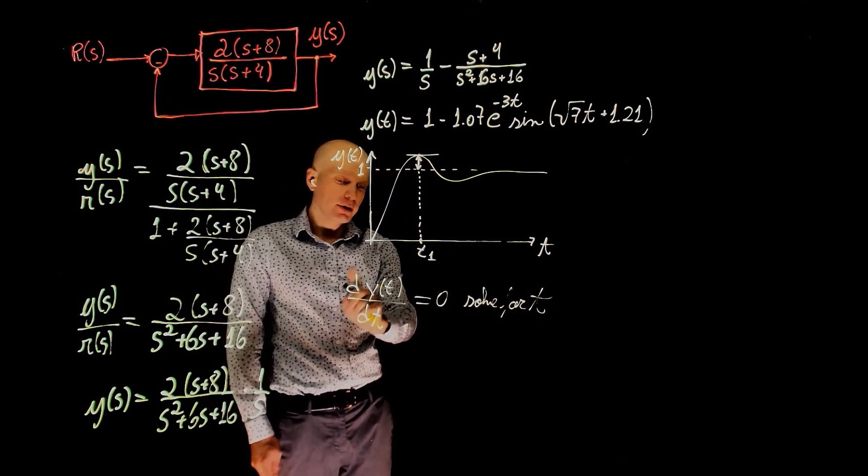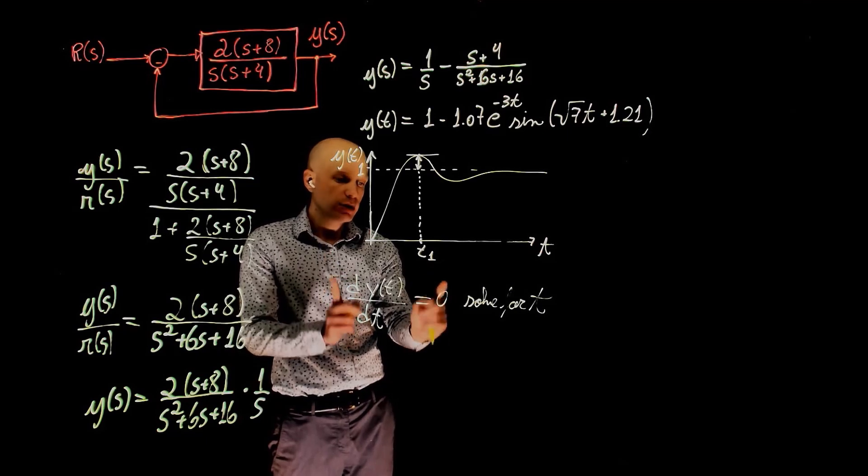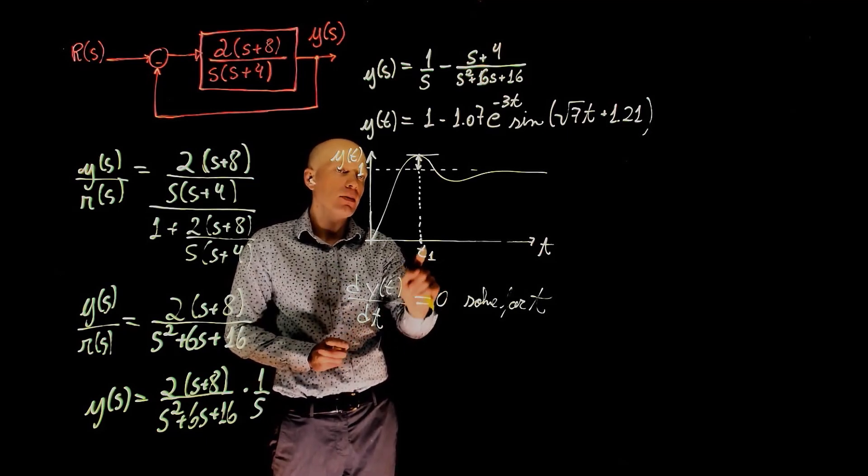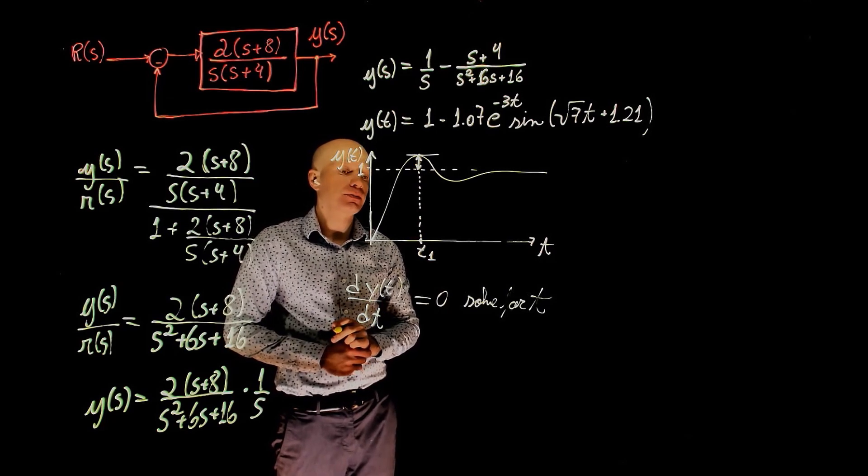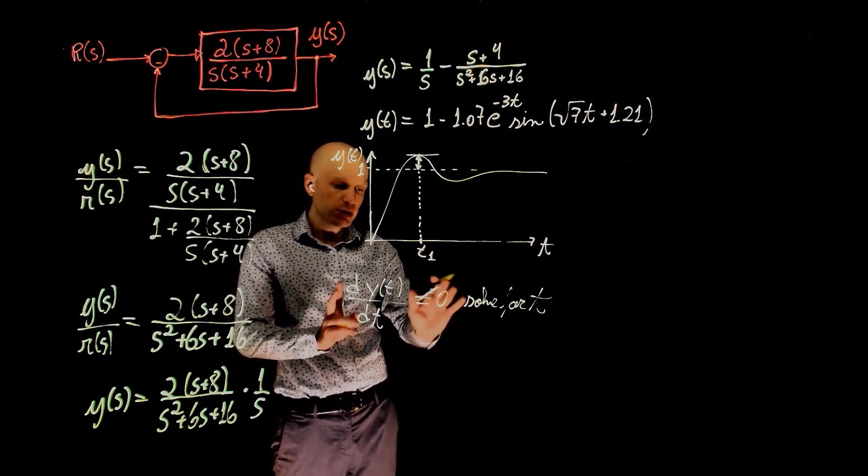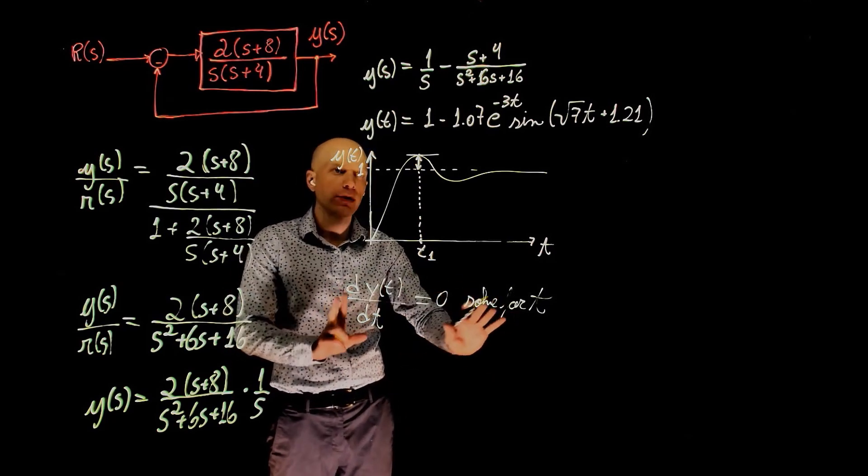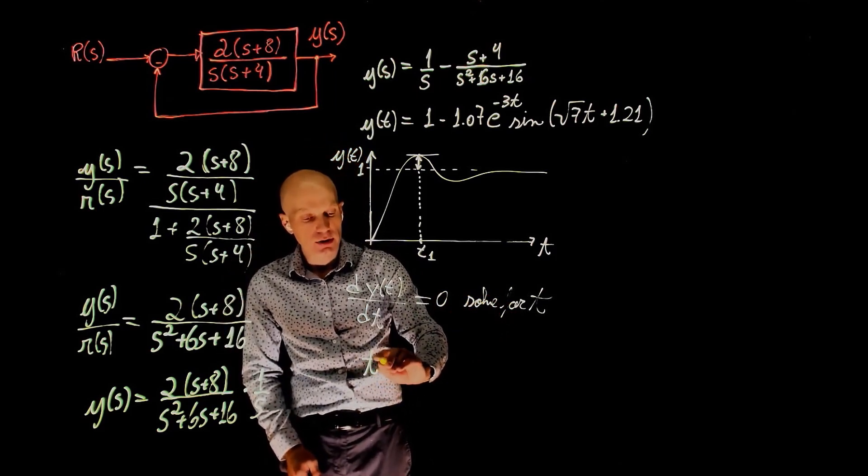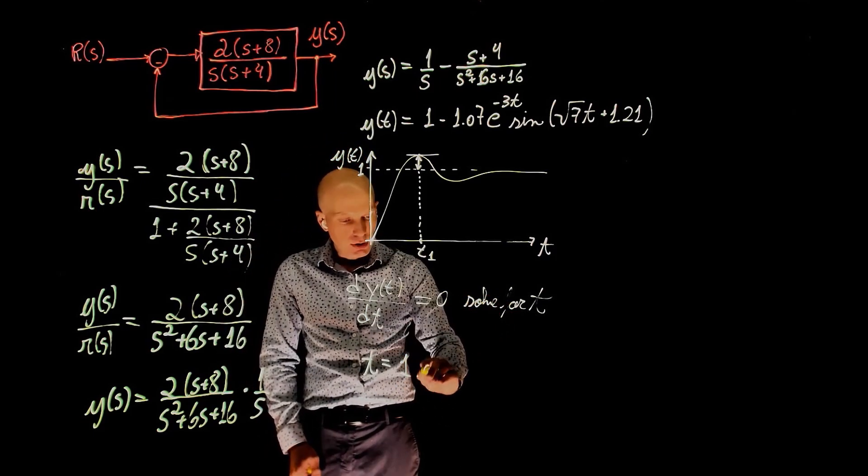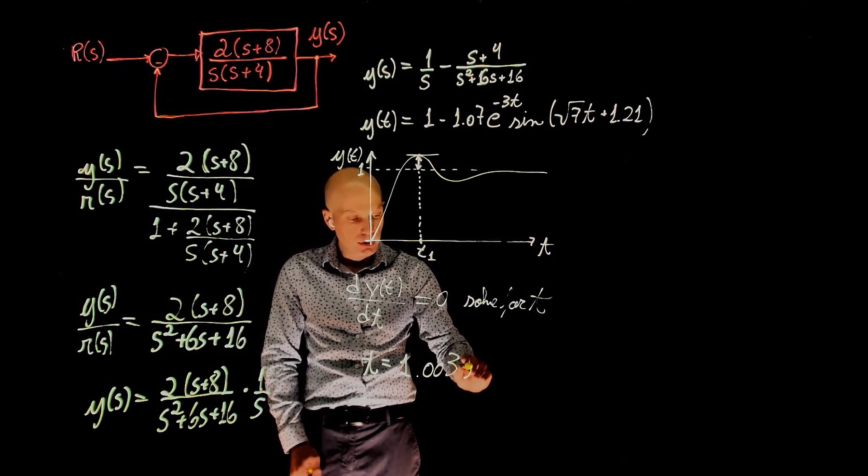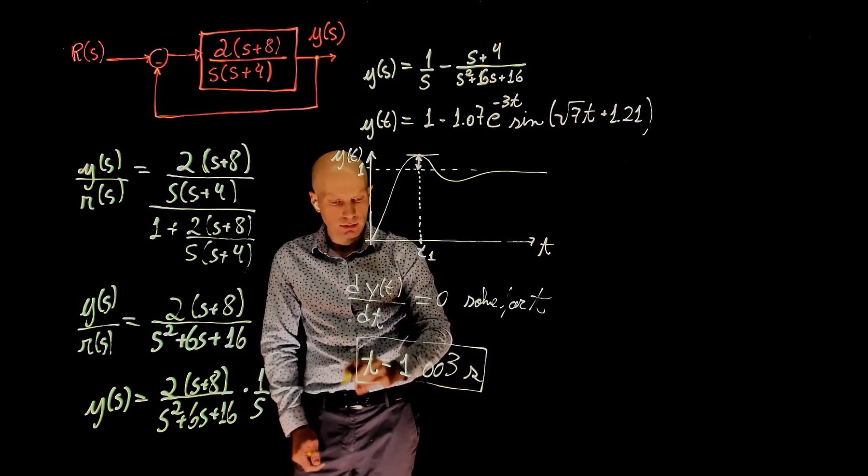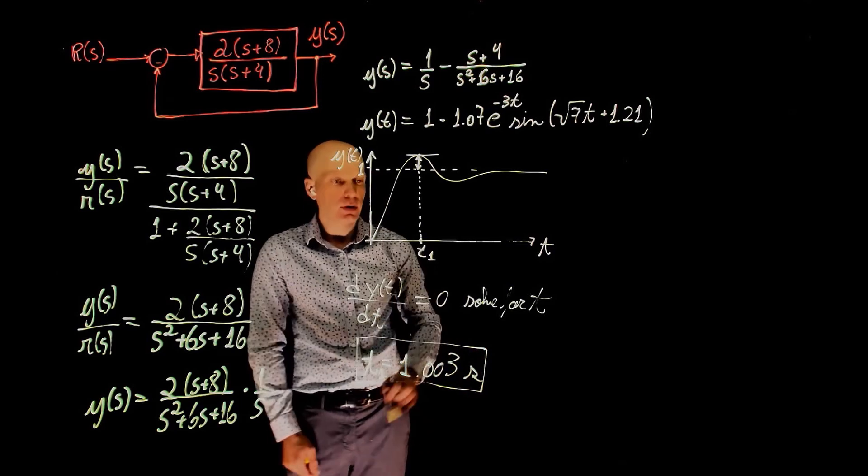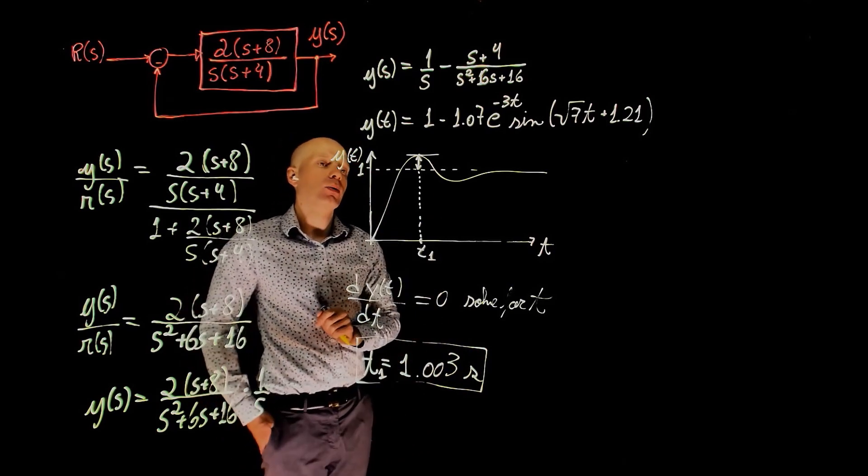And this t that we find here, that satisfies this expression, is the time when the maximum value of y of t occurs. And this time, I'm going to skip this process because it's simple math. The time when the peak occurs is 1.003 seconds. So this is t1. This is the time when the peak occurs.